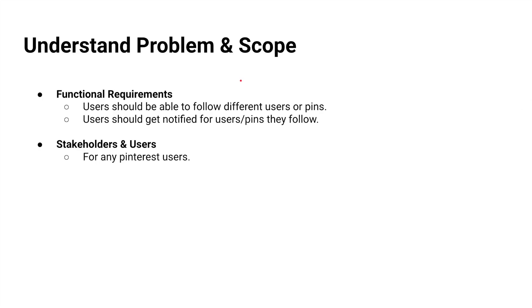First and foremost, before diving into the system design we should fully understand the problem and its scope by asking appropriate questions to the interviewer. For this question, it is straightforward that our functional requirement is to allow users to follow different users or pins, notify users on users or pins that they follow for updates, and this feature should be available to all users in Pinterest.